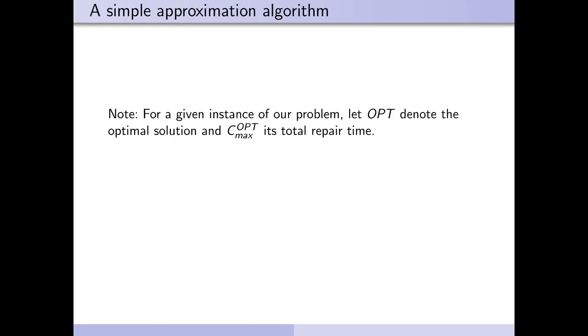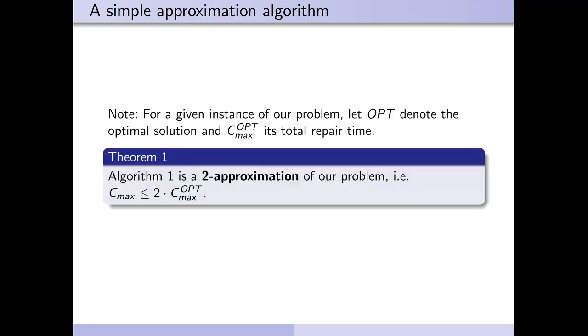Before we go on, quick note, for a given instance of our problem, let OPT denote the optimal solution and Cmax OPT its total repair time. Now let's look at how well our algorithm does. Algorithm 1 is a 2-approximation of our problem. This means that our total repair time is less than or equal to 2 times the optimal repair time.